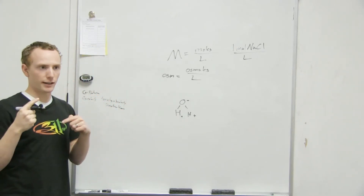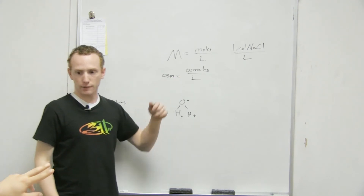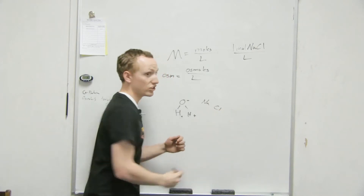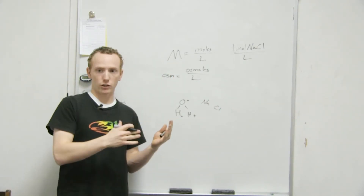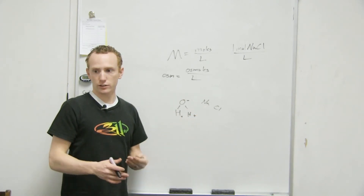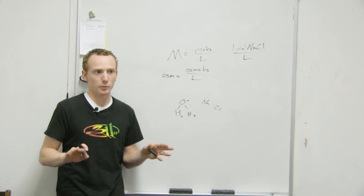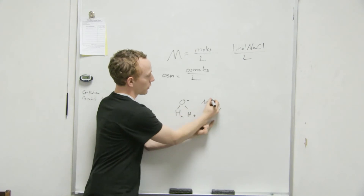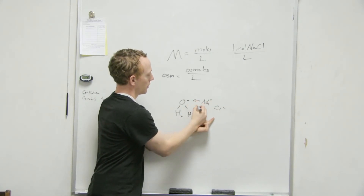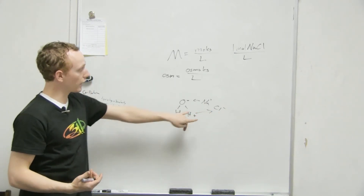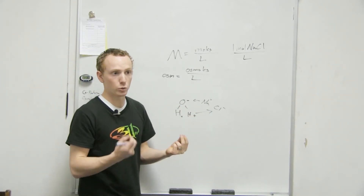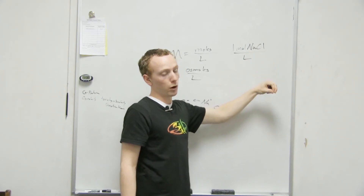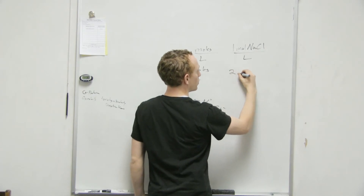You have the right concept. Sodium is positive, chloride is negative. Chloride will bond with oxygen and sodium will bond with hydrogen. Sodium chloride is an ionic bond — ionic bonds are complete transfers of electrons, so sodium gave chloride one of its electrons. The water molecules, because they have polar covalent bonds, are charged and attack the ionic bond, breaking it down into two particles. So one molecule broke down into two particles in water, giving it an osmolarity of two osmols.